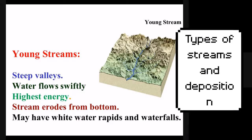Young streams also tend to erode at the bottom of the river rather than the sides, like mature and old streams. Usually young streams will be found in V-shaped valleys. They also tend to have white water rapids and waterfalls due to their steep slopes and fast moving water.